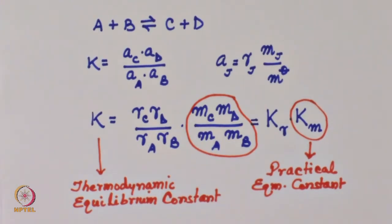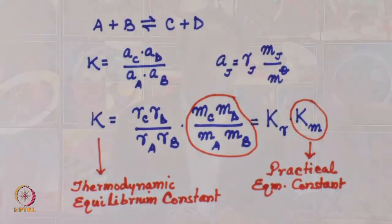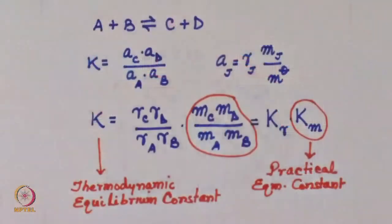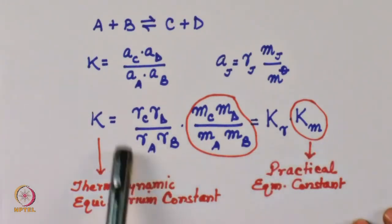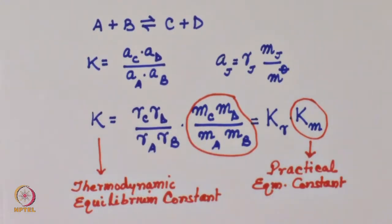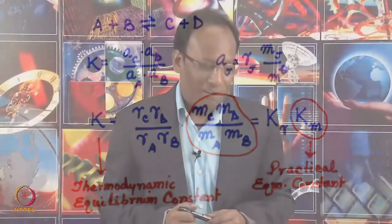How do we get the activity coefficients? There are methods to obtain their values, but the point is that even with such a method, we must know the equilibrium composition in advance, making things complicated. In elementary chemistry — in K_P or K_C type expressions — units are sometimes mentioned; I would call those practical equilibrium constants. If stoichiometric numbers on both sides differ, K_m will carry units, but expressing in terms of activities makes K dimensionless.